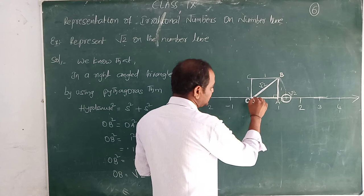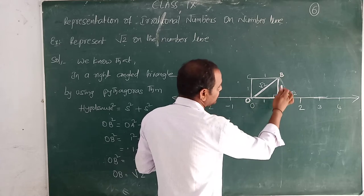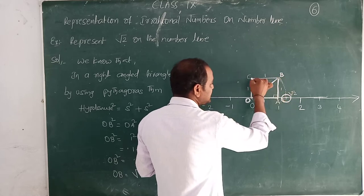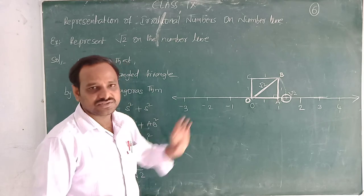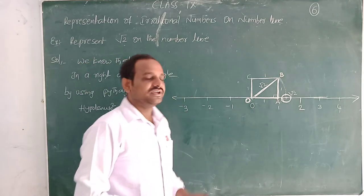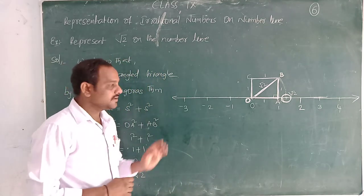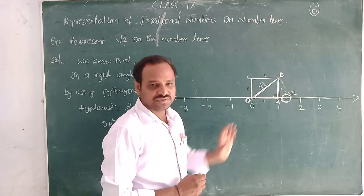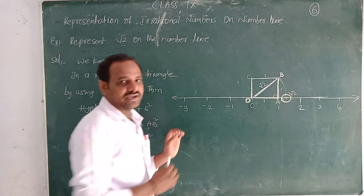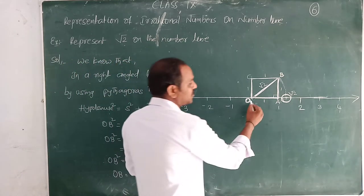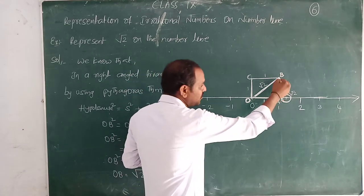Before representing root 2 on the number line, first we take a 1-unit square. Here it is: O, 0, 1 — so OABC is a 1-unit square on the number line. We are taking the positive value of root 2, so we drew the square on the positive side. OA is 1 unit, AB is 1 unit, BC 1 unit, CO 1 unit. Now we draw OB, which is the diagonal of that square.